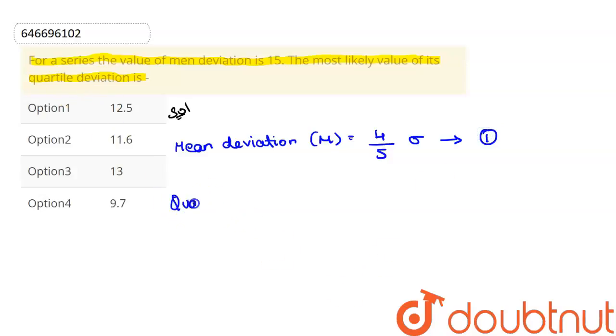Quartile deviation, this is represented as Q, equal to 2 divided by 3 into sigma. So this is the second equation.